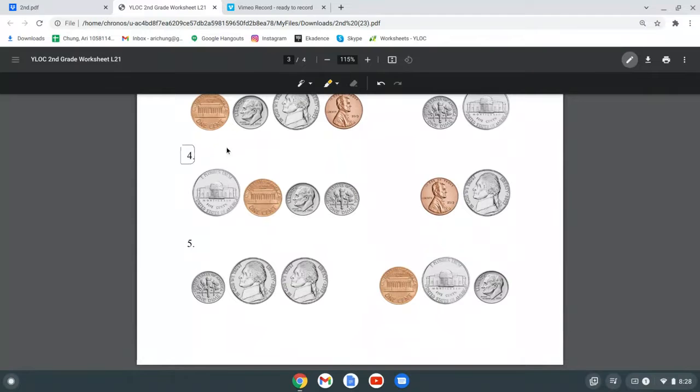Next, we have 5 cents (nickel), penny, dime, dime, penny, and what's this? It's the same as this, nickel, 5 cents. So let's add: 10 plus 10 is 20, 20 plus 5 is 25, plus 1 is 26.